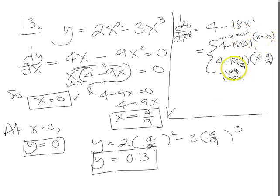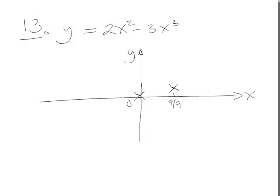So we've got a minimum at 0, a maximum at 4 ninths. So let's go back and put it in there. Minimum at 0 and a maximum at 4 ninths. So that's a minimum. And this was a maximum, wasn't it, at 4 ninths? There we are.